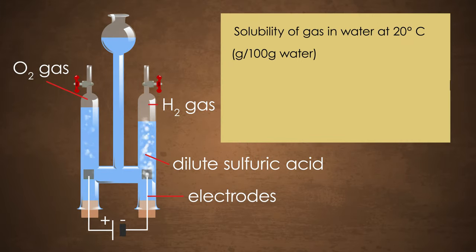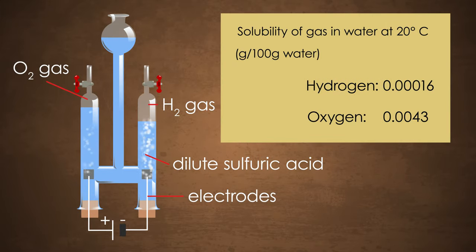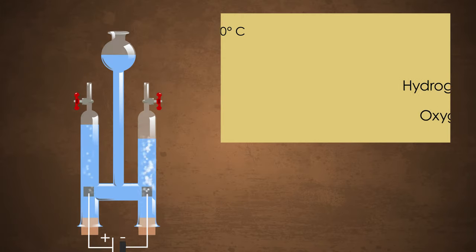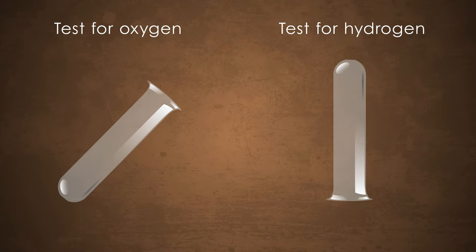The gases are made in a ratio of 2 to 1, but the initial solubility of oxygen in the water sometimes masks this. Testing each gas in the usual way will confirm their identity.